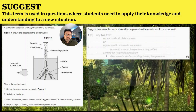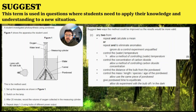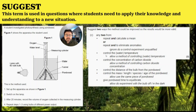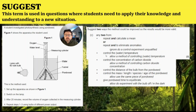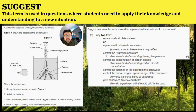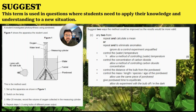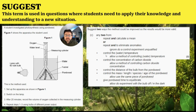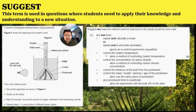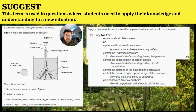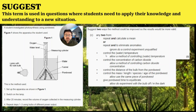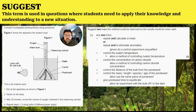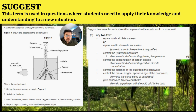Any two from: repeat and calculate a mean, or repeat and exclude an anomaly. If you look at the question, it doesn't mention repeats at all, so you can mention that. Control the temperature — again, it doesn't mention anything about temperature, and you can see that the lamp has a 60-watt bulb, so it's going to produce a lot of heat. Control the concentration of carbon dioxide — again, that's not mentioned, and you need to do that as a control feature.